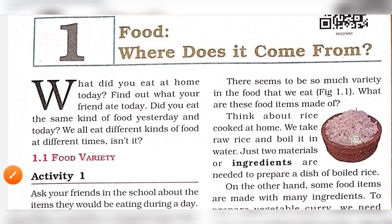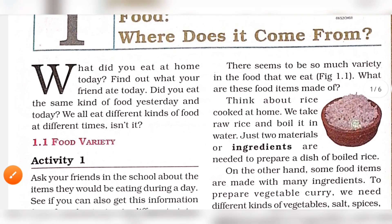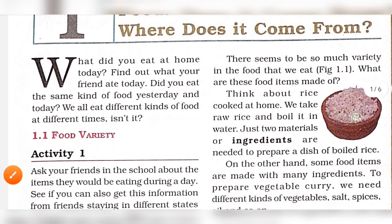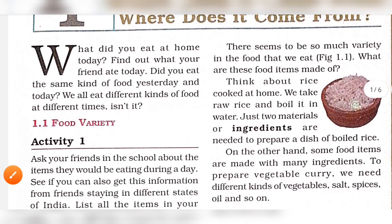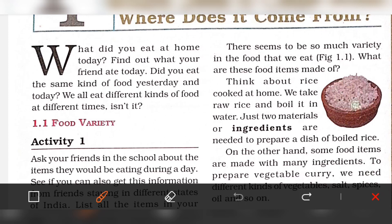There seems to be so much variety in the food that we eat. What are these food items made of? Think about rice cooked at home — we take raw rice and boil it in water. There are just 2 materials or ingredients needed to prepare a dish of boiled rice.